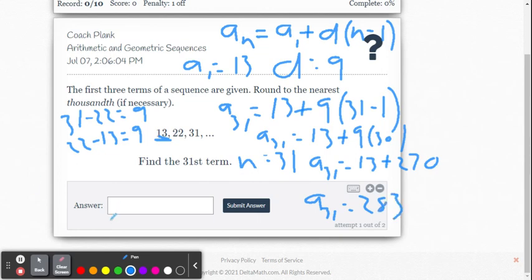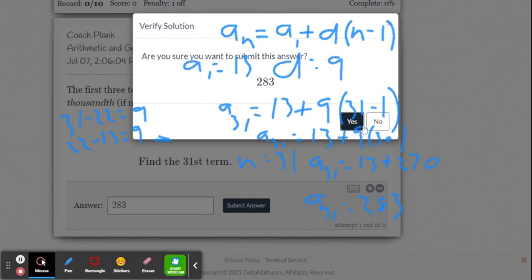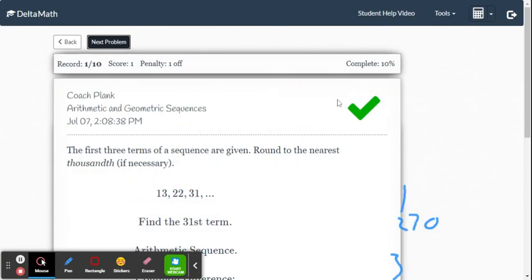Now we're going to input our answer and see if we got it correct within Delta Math. Submit. Yes, I'm sure. And we got the check mark.